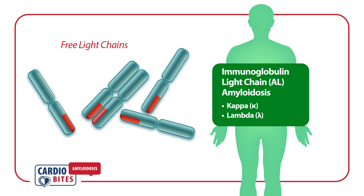Immunoglobulin light chain amyloidosis, or AL, occurs when a clonally expanded population of immunoglobulin-secreting cells produces a monoclonal light chain of the kappa or lambda type, as either an intact molecule or a fragment.